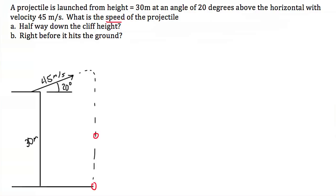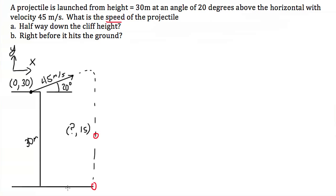I'm going to call the upward direction the positive y direction, and to the right the positive x direction — always state your directions in a physics problem. The initial launching point has an x-coordinate of zero and an initial y of positive 30. The point halfway down the cliff has a y-coordinate of 15, and the landing point has a y-coordinate of zero.